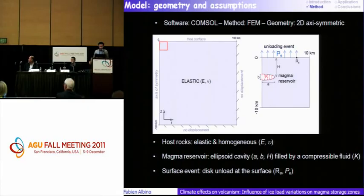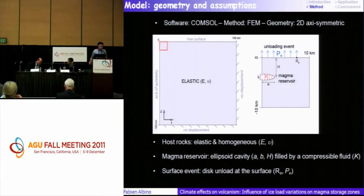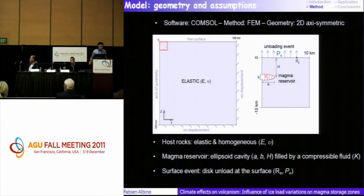This is a sketch to illustrate my modeling. I have an elastic medium, considered as homogeneous and isotropic. I model the magma reservoir as an ellipsoid cavity. I apply an unloading event at the surface and calculate the stress change around the magma reservoir.